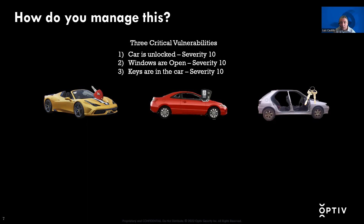This is only three cars with three vulnerabilities — and if you give this picture to a bunch of 10-year-olds, nine out of ten will pick the cool-looking yellow Ferrari. But in real life, we're not dealing with just three assets. Depending on the size of your company, you're dealing with 2,000, 10,000, 50,000 or more assets, and thousands to hundreds of thousands of vulnerabilities across your environment. So again, how do we manage this?